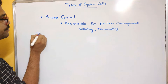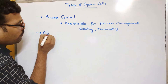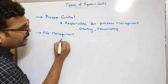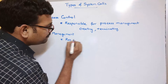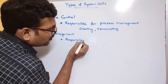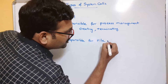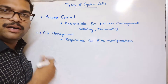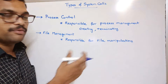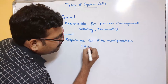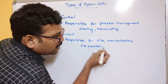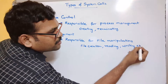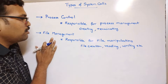The next category is file management system calls. These system calls are responsible for file manipulations. Since files hold data, we work on different files — file creation, operations, reading, writing, etc. All of these are handled by the file management system calls.